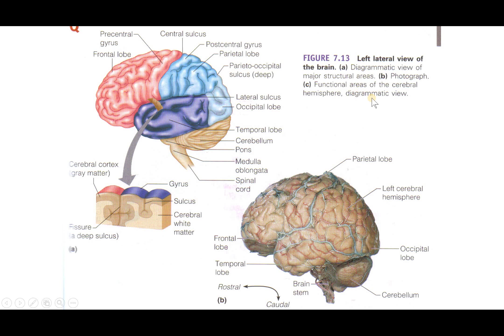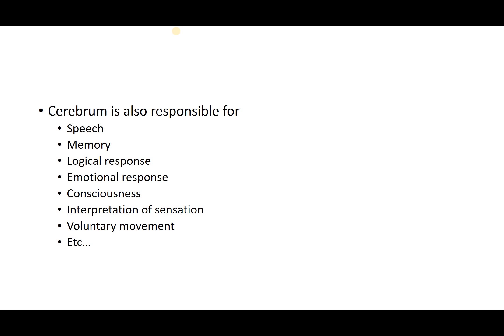Here you're seeing red which denotes motor and blue which denotes sensory. The precentral gyrus, the postcentral gyrus, and the central sulcus are important structures. The cerebrum is responsible for speech, memory, logical response, emotional response, consciousness, interpretation of sensation, and voluntary movement — not an exhaustive list, but these are key functions to know.